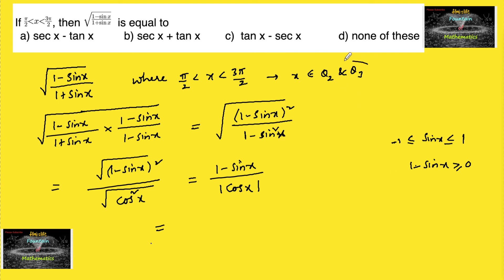And since in the second quadrant and third quadrant, for x lies between pi by 2 and 3 pi by 2, that is second and third quadrant, cos x is negative.